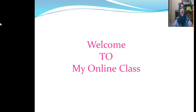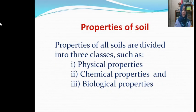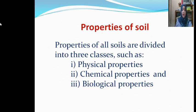Dear students, today I discuss with you Chapter 3. Our today's topic is Properties of Soil. Soil properties influence crop production. What kind of crops can be produced on which types of soil depends on its characteristics. Properties of all soils are divided into three classes: Physical Properties, Chemical Properties, and Biological Properties.